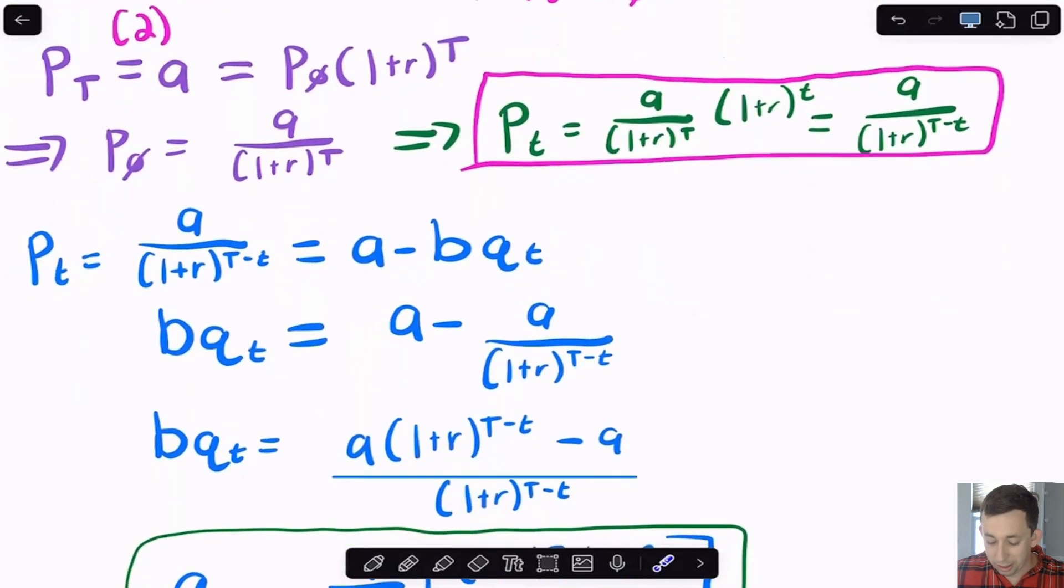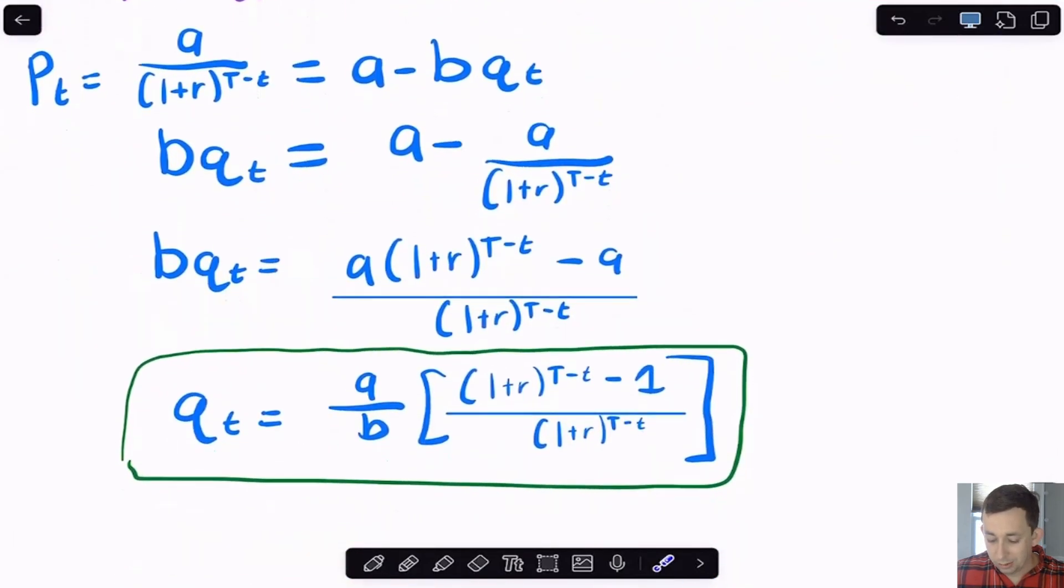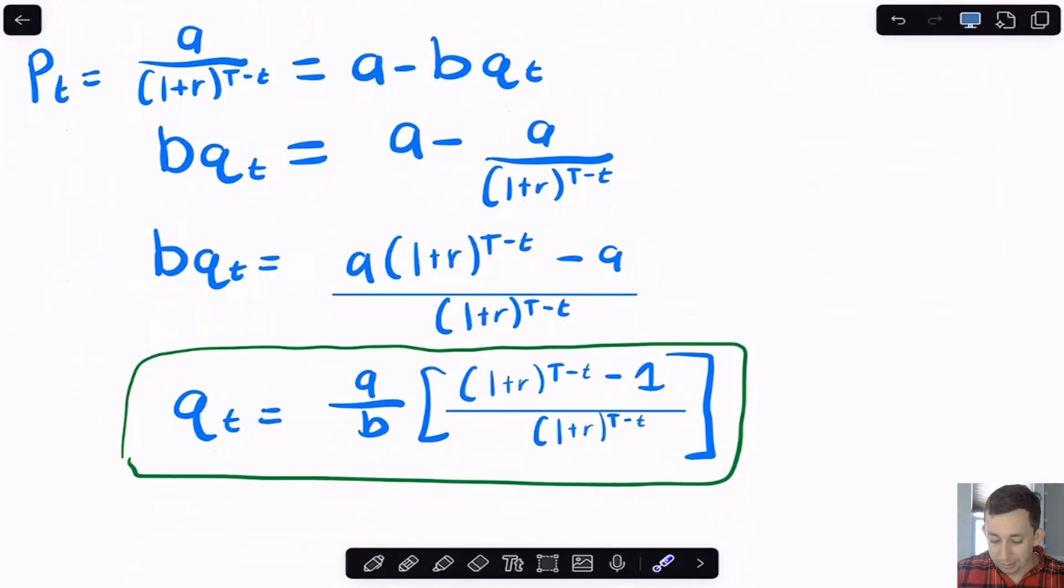So now I've got my PT, and I'm going to just solve that for QT. So I'm going to work through the algebra. And I'm going to get this big messy equation right here, where QT is A over B times this messy thing right here. So now I've got QT.